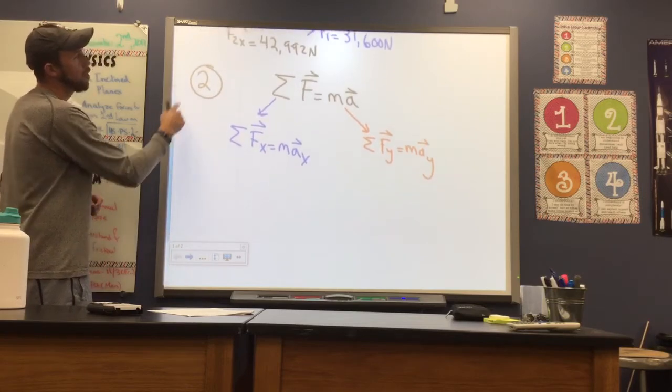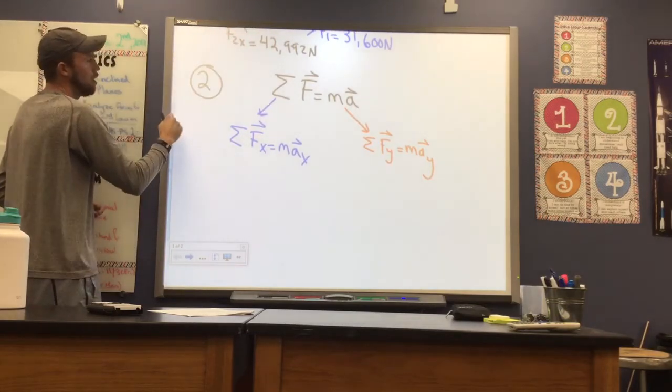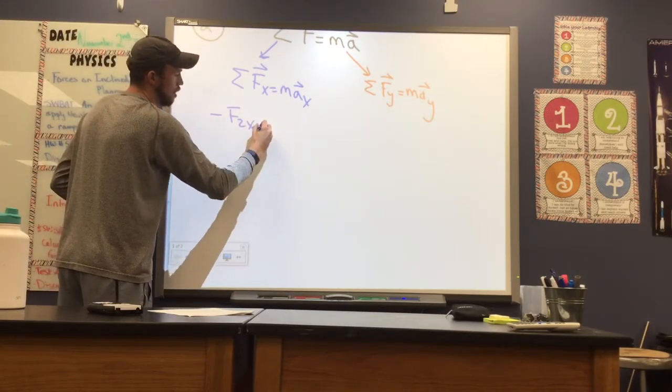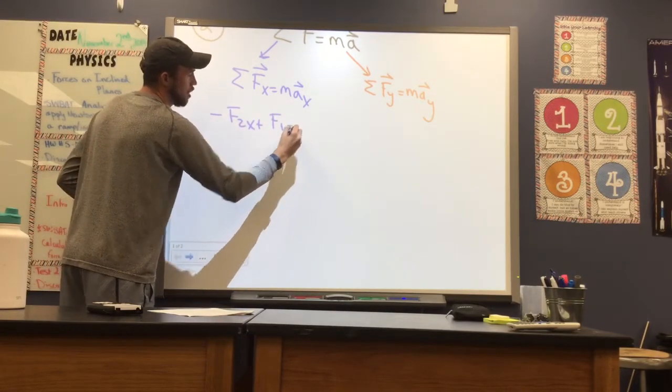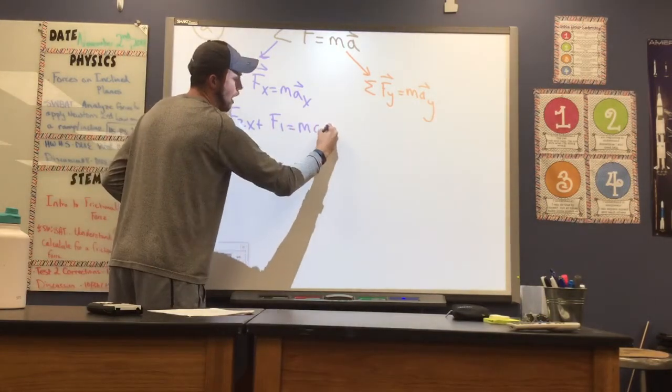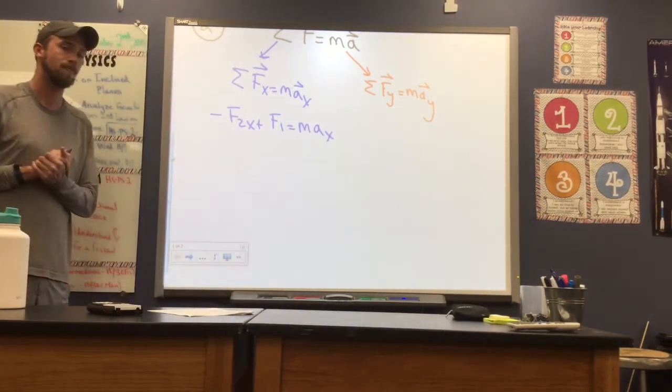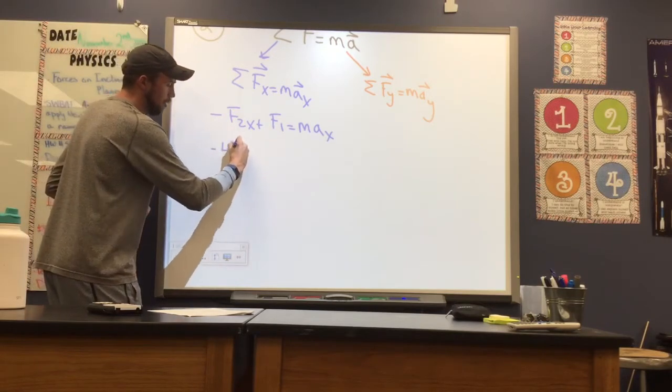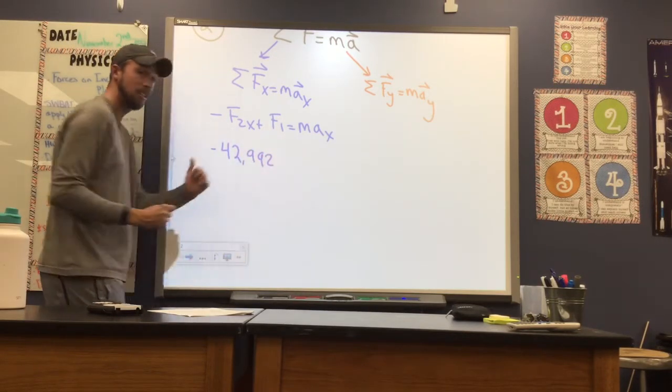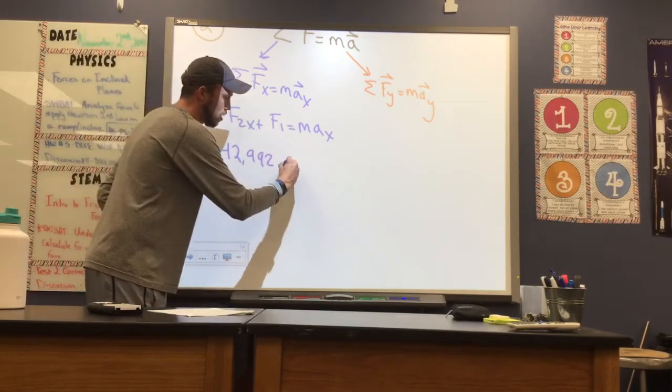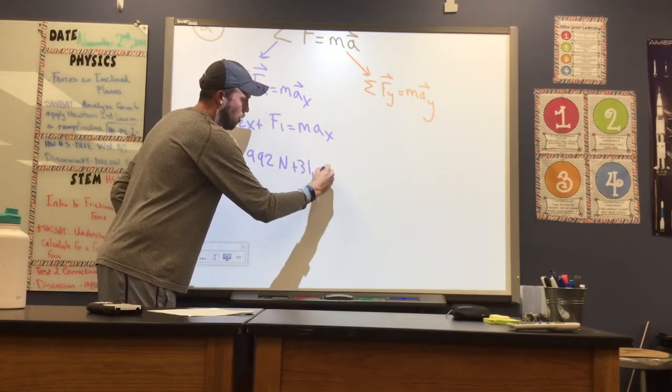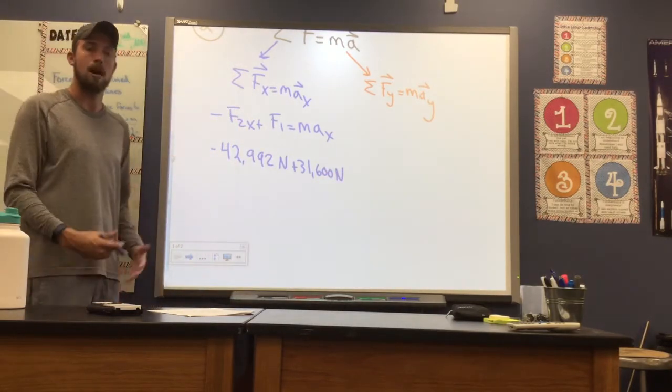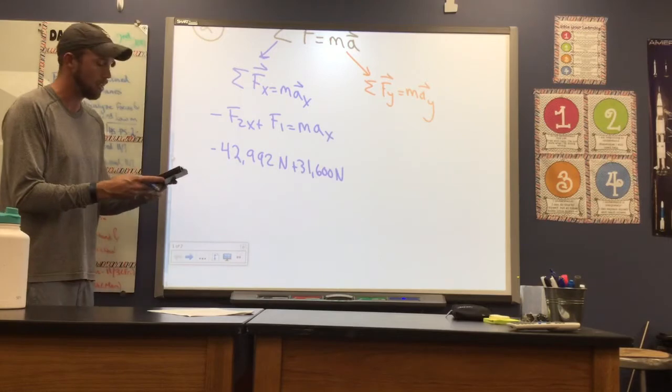So I'm going to write out my equation for Newton's second law. I'm going to say that F2 in the X direction is negative, because it's pointing to the left. So negative F2 in the X plus F1 is going to equal my mass times my acceleration in the X. So this value is negative 42,992, because it's in the negative direction, newtons, plus 31,600 newtons. Just adding those forces up. One's negative, one's positive.